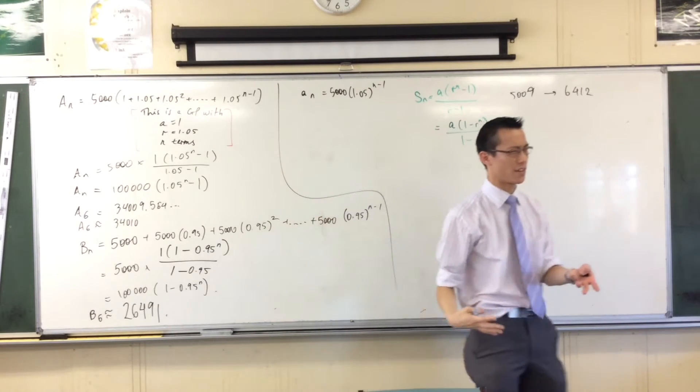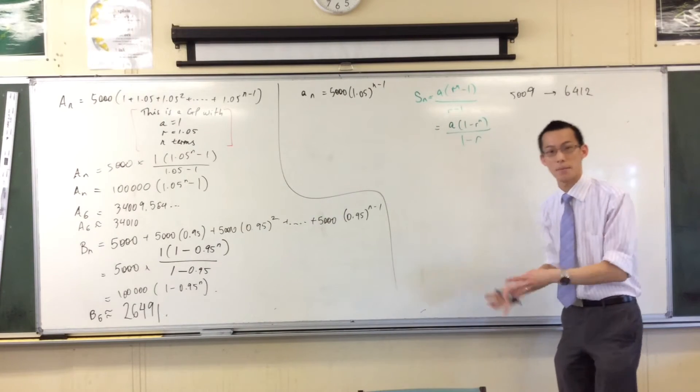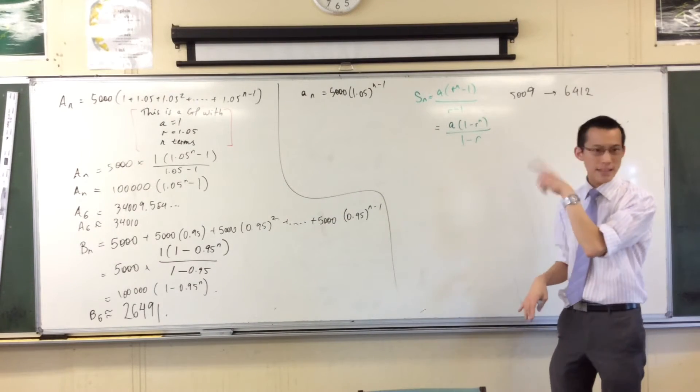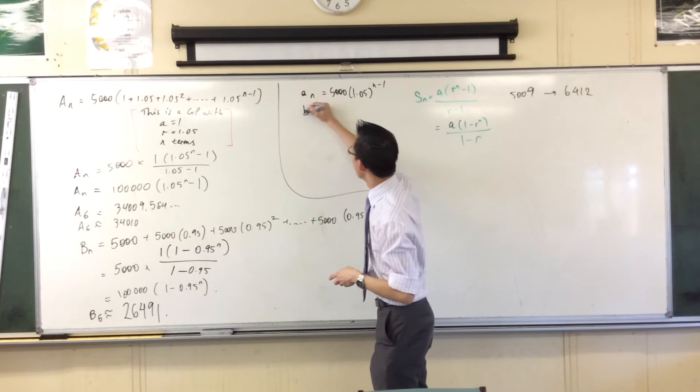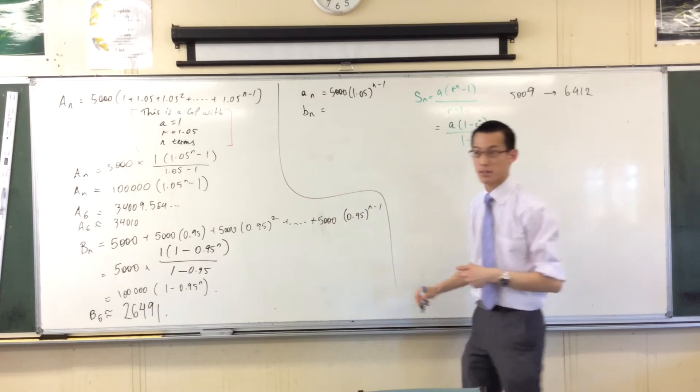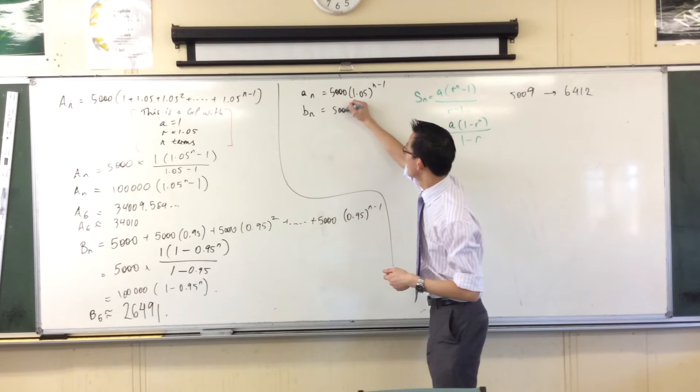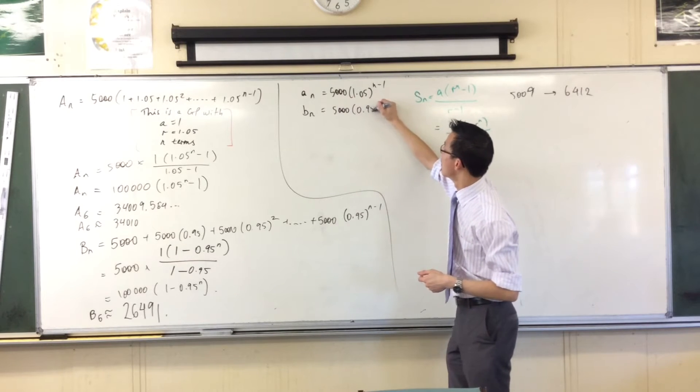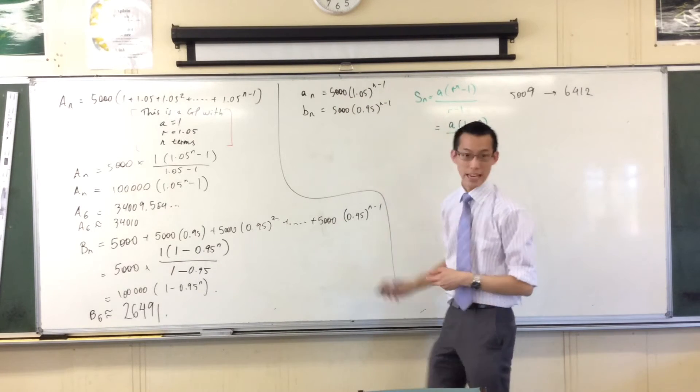That was my last year. So this is like that recursive definition again. I want T of n, the end term not the whole thing. That's a sub n. I can work out lowercase b sub n which is 5,000 times 0.95 to the n.